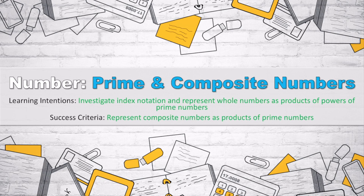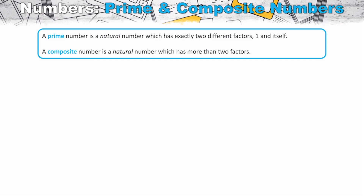Let's talk about prime and composite numbers and how we can use prime numbers to break a composite number down using something known as a factor tree. First we need to define what prime and composite numbers are and go through some examples of each.